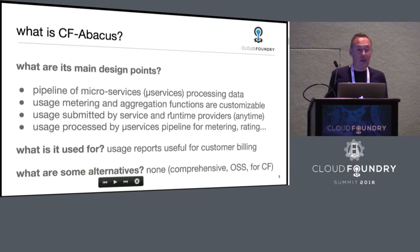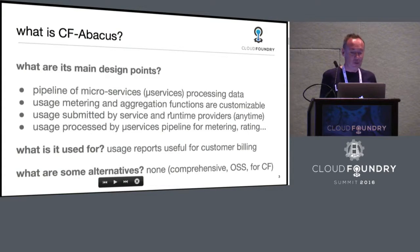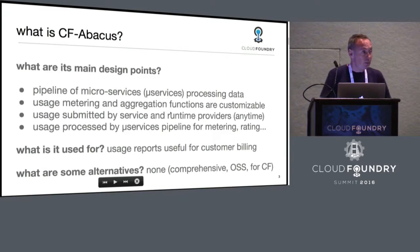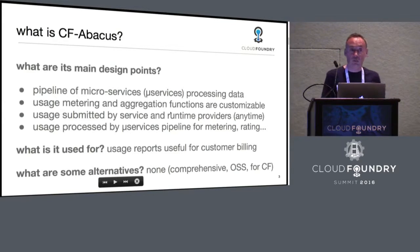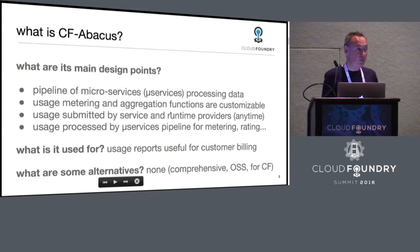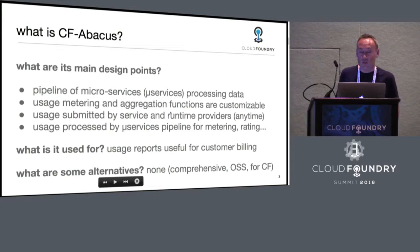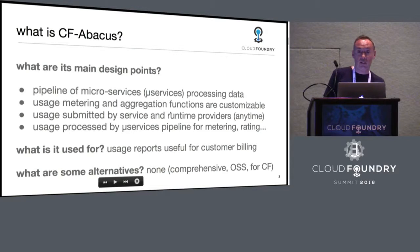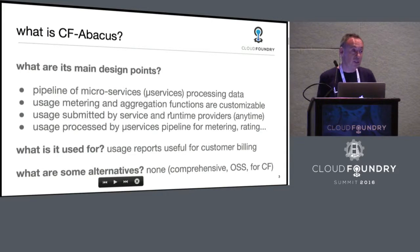So what is Abacus and what are its main design points? It's basically a pipeline of microservices that will process your usage data. If you're using Cloud Foundry, you're running applications in multiple instances and they use memory. We collect that data, turn it into aggregated usage, multiply it by price, and that gives you a cost — a way to charge your customers or teams.